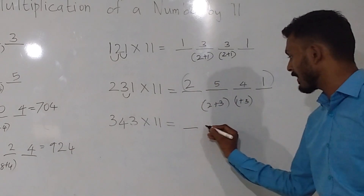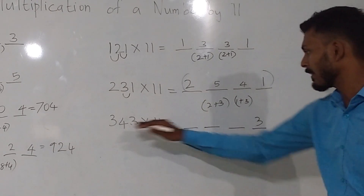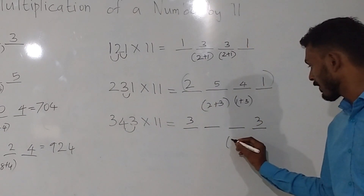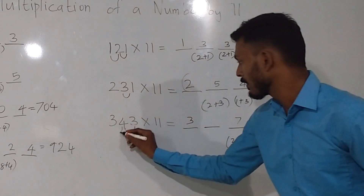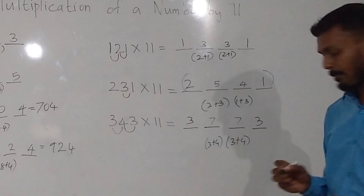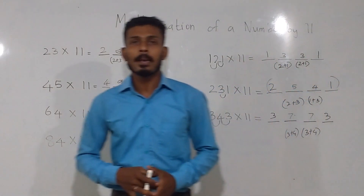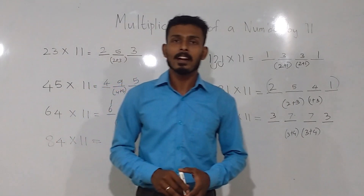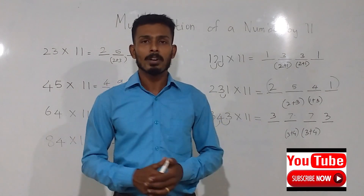First, 3 is held — this is the last number. If we look at this number, we will add to this number: 3 plus 4, this is 7. And of this number, 3 plus 4, this is 7.